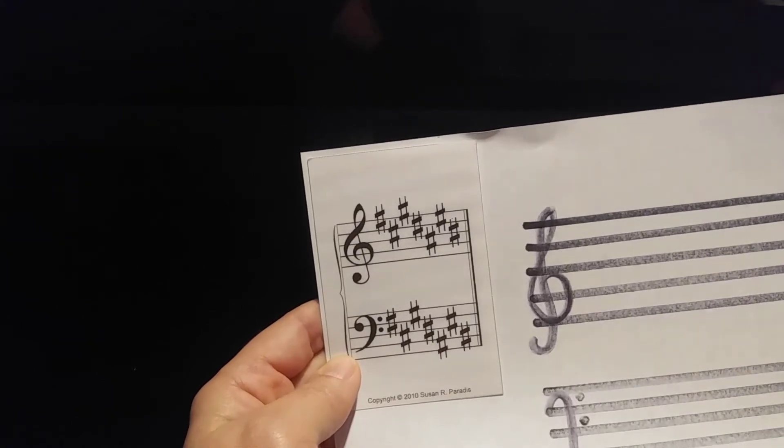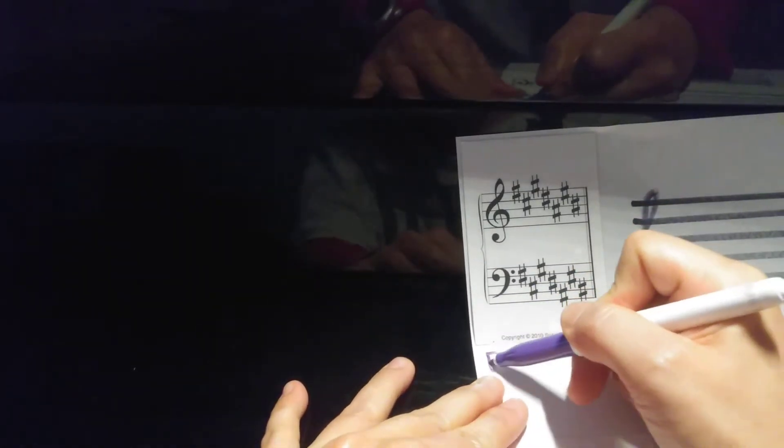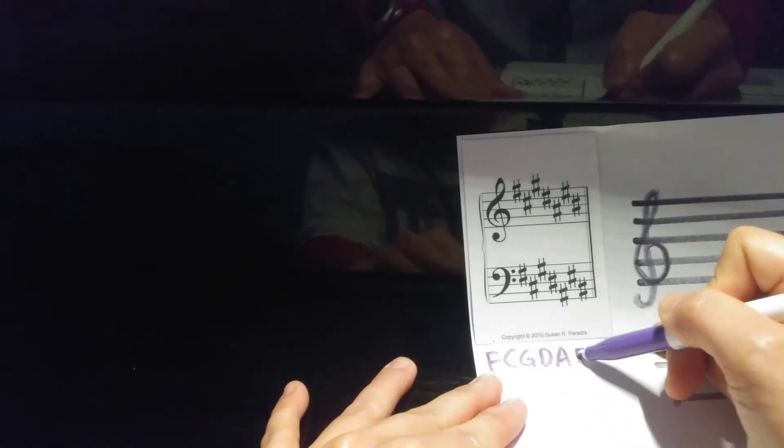Here's the key signature. So you have sharp and you have flat. The order of sharps we know is fat, cat, girl, down, Ellie, eating burger.